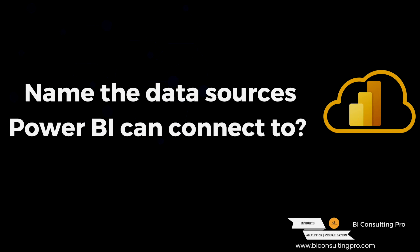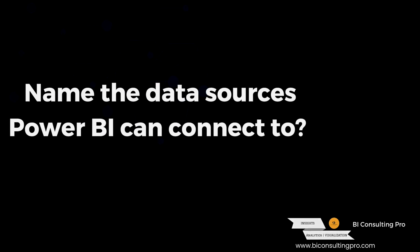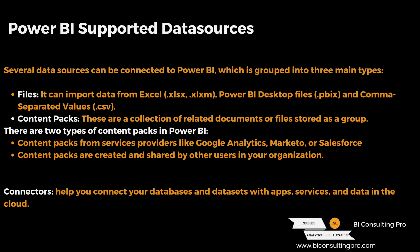Name the data sources Power BI can connect to. Power BI can connect to hundreds of data sources, grouped into three main types. The first is Files — which can import data from Excel, Power BI Desktop files, and CSV files. The second is Content Packs — collections of related documents or files stored as a group, divided into two types: content packs from service providers like Google Analytics, Marketo, or Salesforce; and content packs created and shared by other users in your organization. The third is Connectors — which help you connect your database and datasets with apps, services, and data in the cloud.